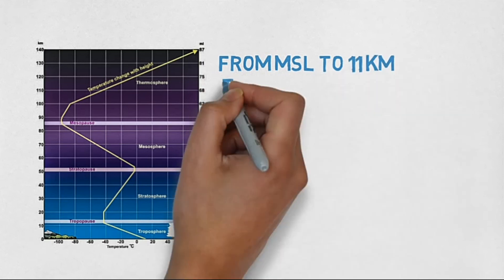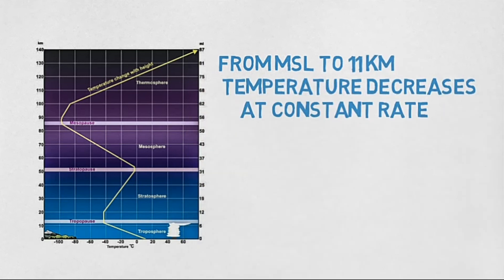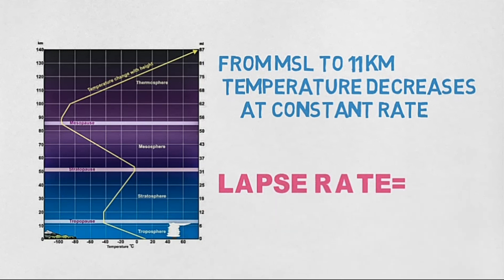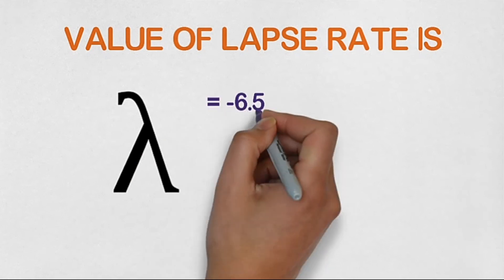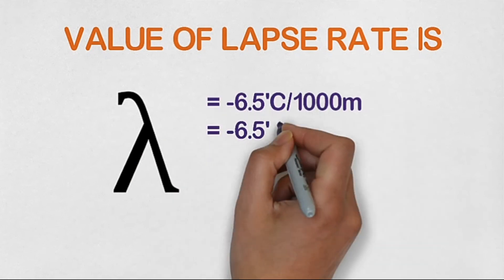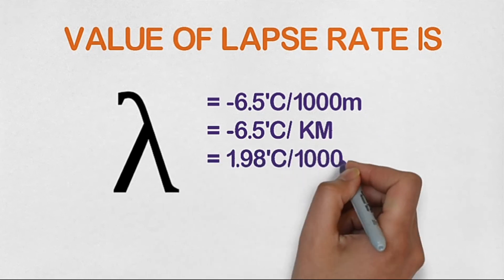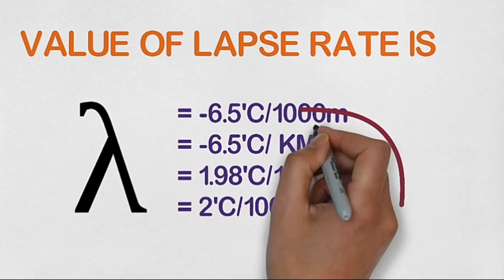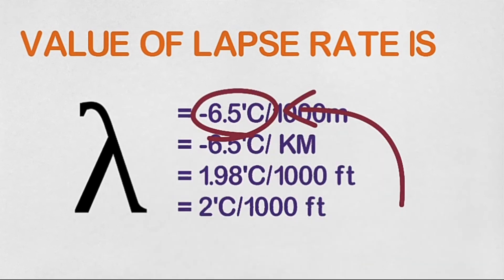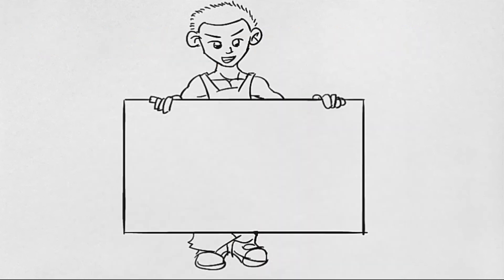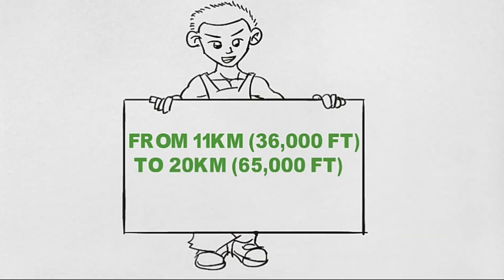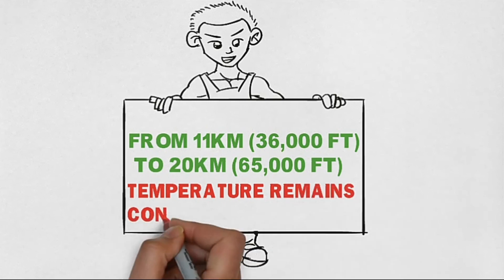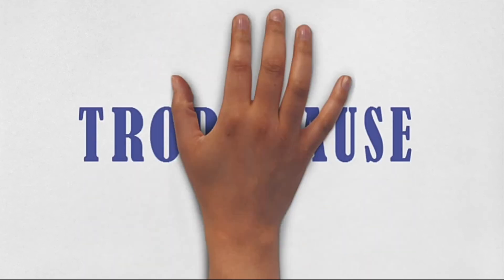As we go higher in the troposphere from mean sea level to 11 km, temperature decreases at a constant rate. This constant rate of decrease is known as the lapse rate, denoted by the Greek letter lambda (λ). Its value is −6.5°C per kilometer (or −6.5°C per 1,000 m), or approximately −2°C per 1,000 feet. The negative sign indicates decreasing temperature with altitude. From 11 km to 20 km (up to ~65,000 feet), temperature remains constant at −56°C — this region is known as the tropopause or lower stratosphere.